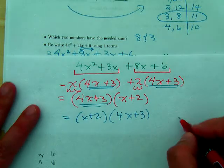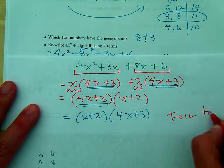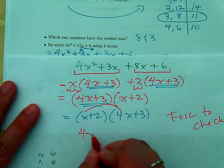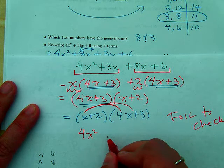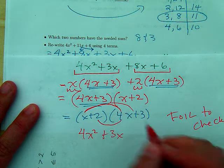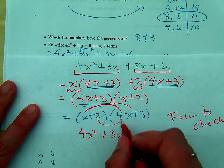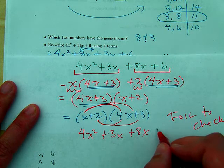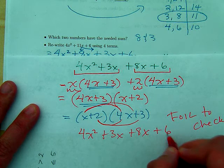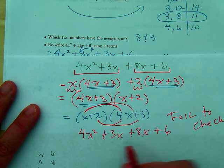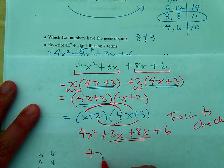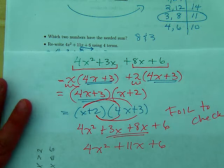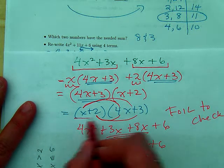Now, if we want to foil it, we can always foil to check. So when I foil, I go x times 4x. That's 4x². x times 3 is 3x. 4x times 2, or 2 times 4x is 8x. And last, there's our 6. So was that the same thing that we started with? Well, we could combine our like terms, 4x² + 11x + 6. Was that the same thing? So this is your answer.